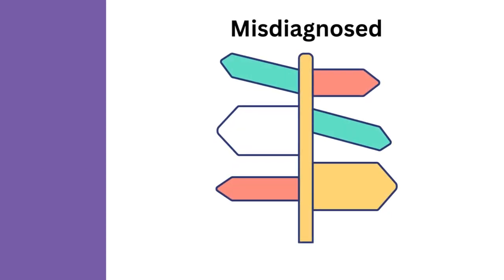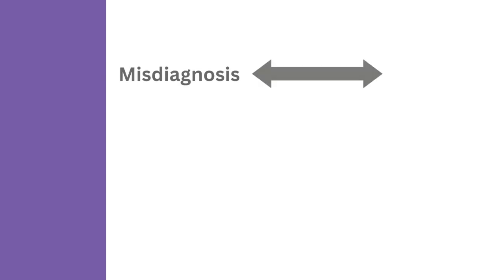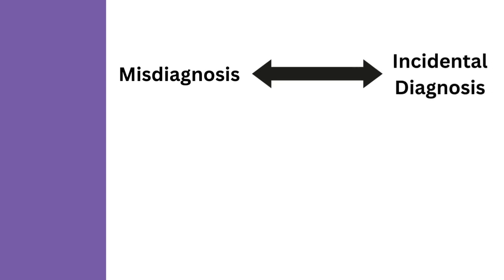In addition to missed diagnosis, Chiari is also sometimes misdiagnosed as something else. Because of overlapping symptoms, Chiari patients have been wrongly diagnosed with multiple sclerosis, chronic fatigue syndrome, cluster headaches, ALS, and even carpal tunnel syndrome.